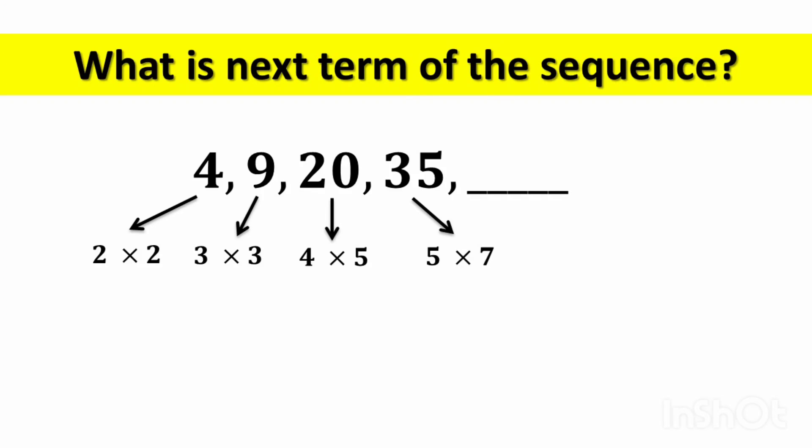Now, look at the pattern. The first numbers are 2, 3, 4, 5. So, these are consecutive numbers.